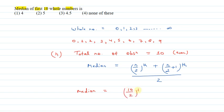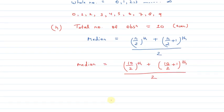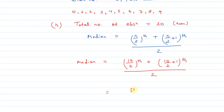Total number of observations is 10 (even). Median formula is: (n/2)th plus (n/2 + 1)th divided by 2. So, we have (5th plus 6th) divided by 2.